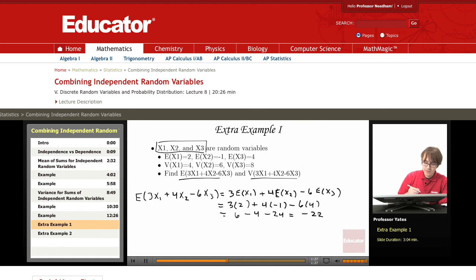And now we do this for the variance, 3x1 plus 4x2 minus 6x3. Now what happens with the variance is that when I bring out that coefficient, it becomes squared.